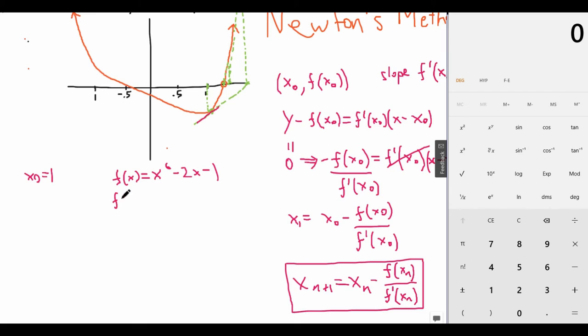And f'(x), using our power rules of derivatives, is equal to 6x to the power of 5 minus 2. So our formula in general would be x_{n+1} equals x_n minus (x_n^6 - 2x_n - 1) over (6x_n^5 - 2). This is our general formula.